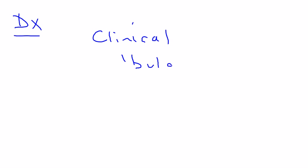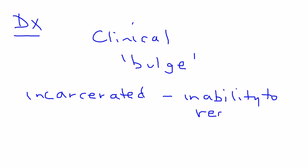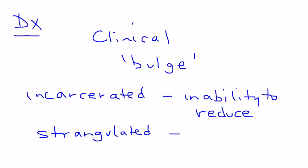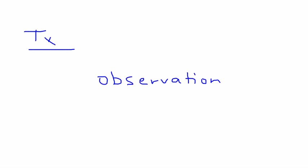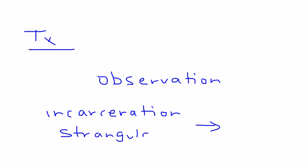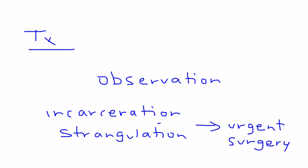Diagnosis is essentially a clinical diagnosis — you see the bulge. If it's incarcerated, there is an inability to reduce the hernia. If it's strangulated, you check vitals and order a WBC count and see a more serious presentation. Treatment is observation if there are no real problems, but if there is incarceration or strangulation, urgent surgery is required.